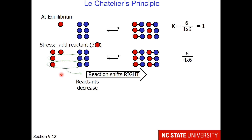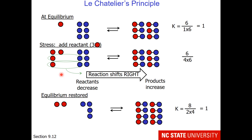So let's take 2 red and 2 blue and turn them into product. When this reaction shifts right, reactants decrease and products increase. So when I am done, I now have 8 product molecules, 2 red spheres, and 4 blue spheres. Notice that my equilibrium constant is back to 1. I have re-established equilibrium.